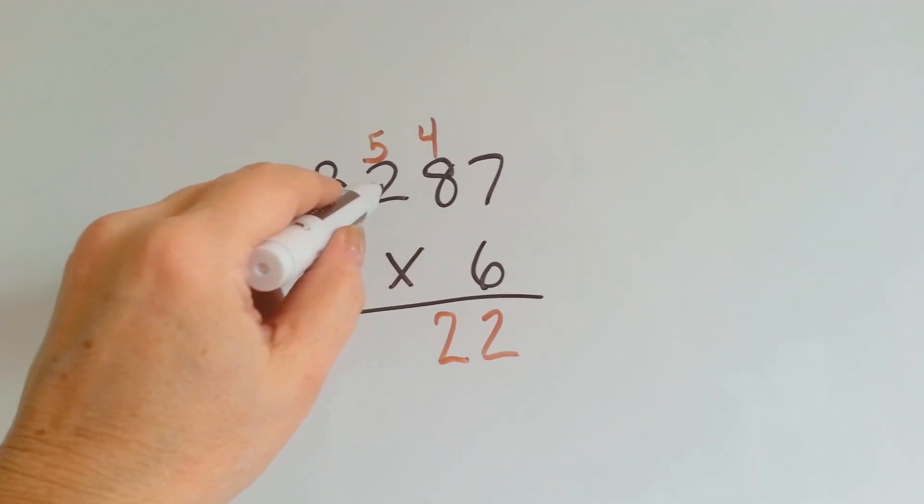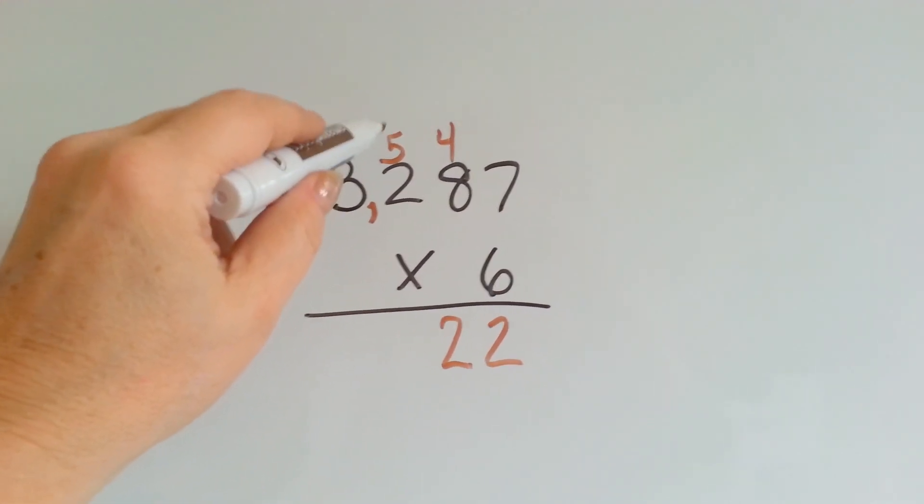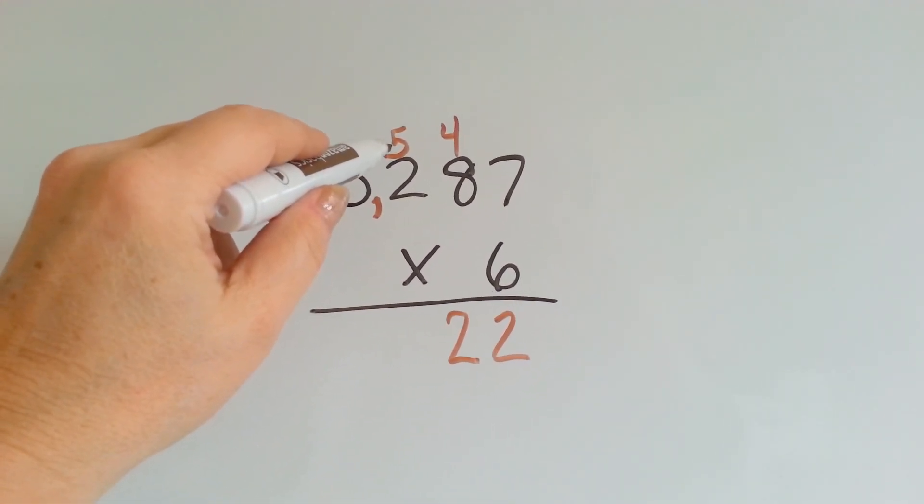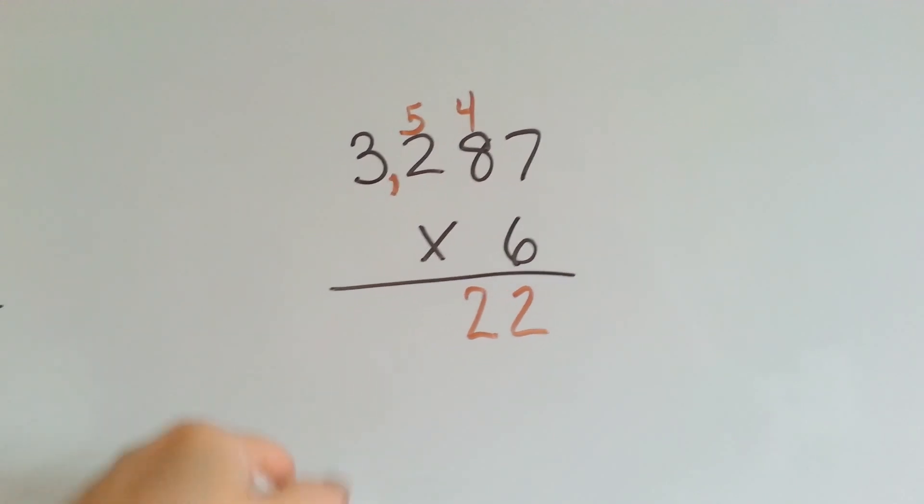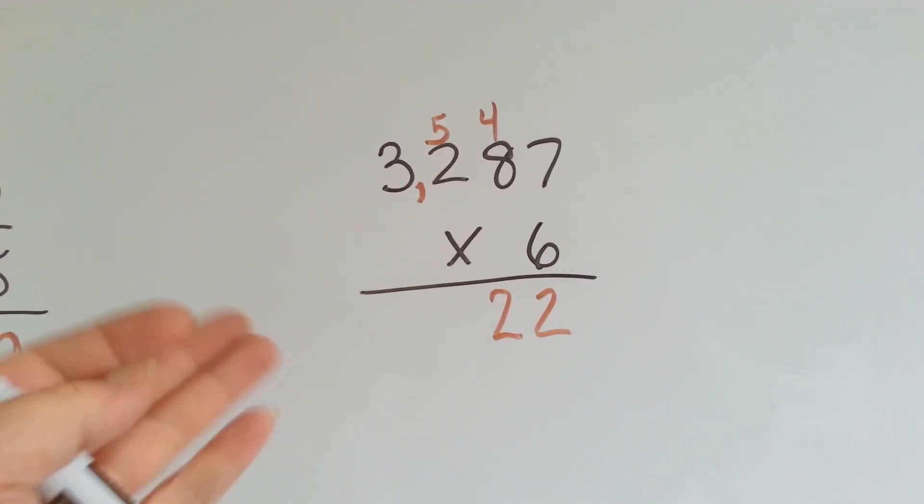6 times 2 is 12, plus the 5 is 17. We carry over the 1 and put the 7 down.